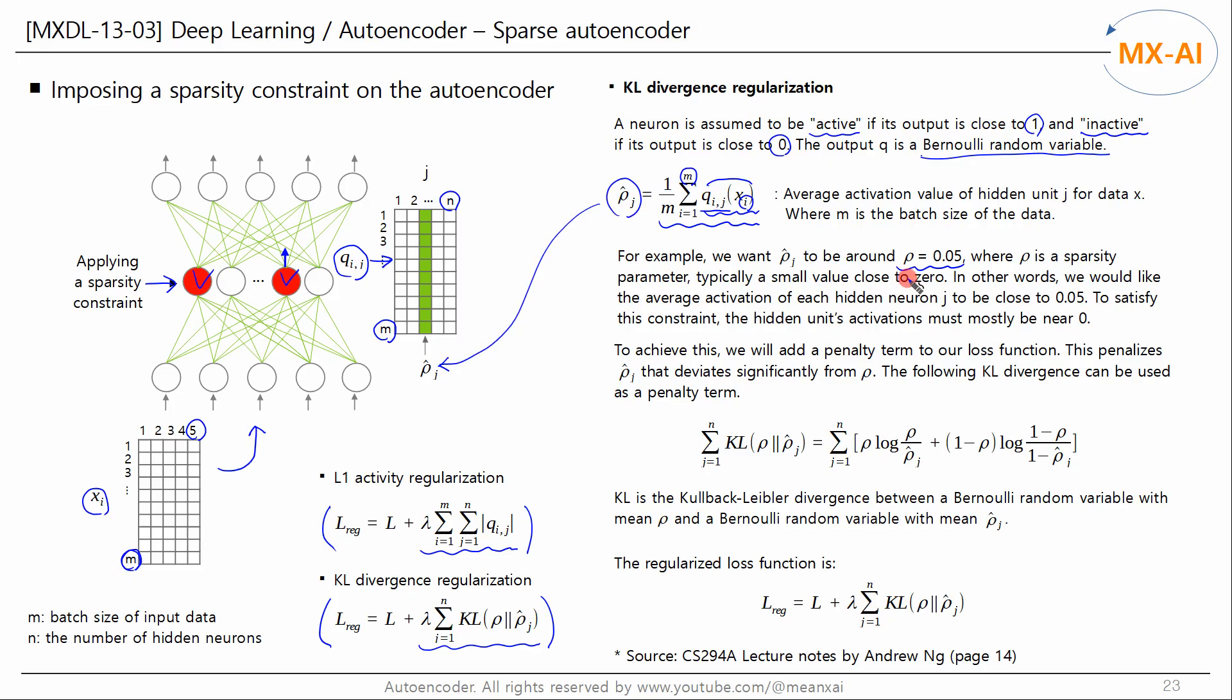For example, we want to train this neural network so that rho hat j is around 0.05. Let's call the desired output 0.05, rho. Rho is a sparsity parameter, typically a small value close to 0. That is, we want the average output of each neuron in this hidden layer to be approximately 0.05. For the average to be as small as 0.05, the outputs of this hidden layer must mostly be near 0. This means that the outputs of this hidden layer become sparse.